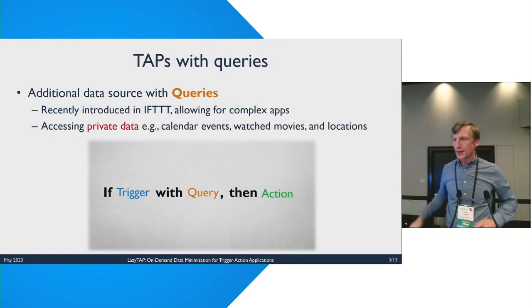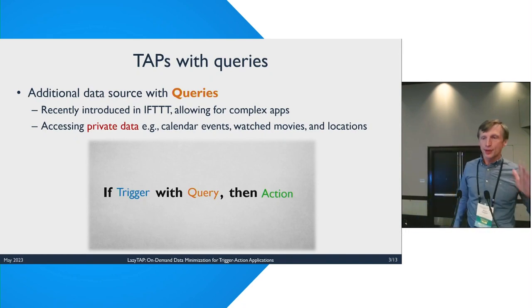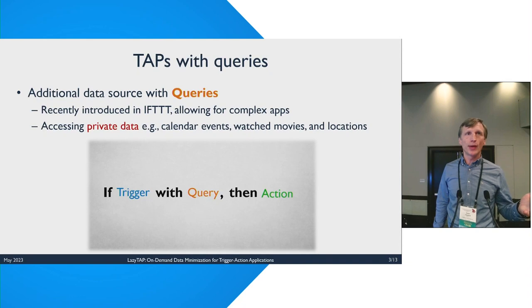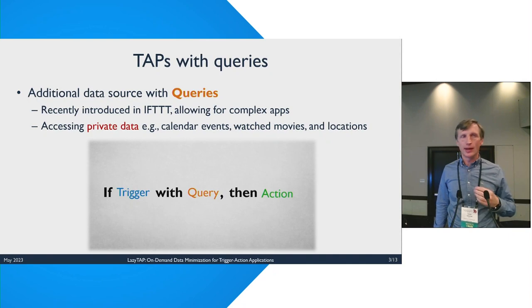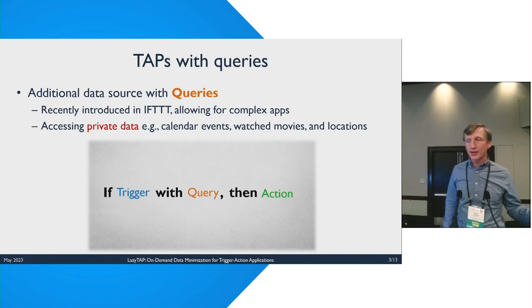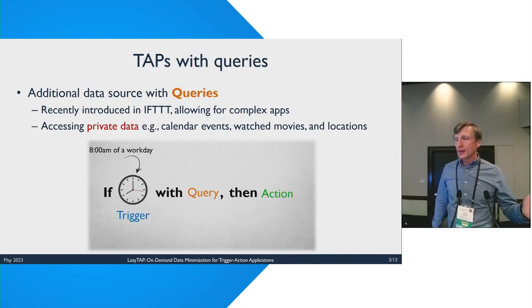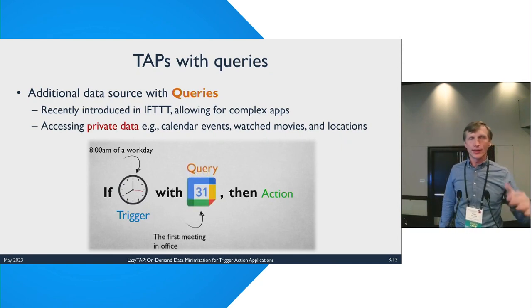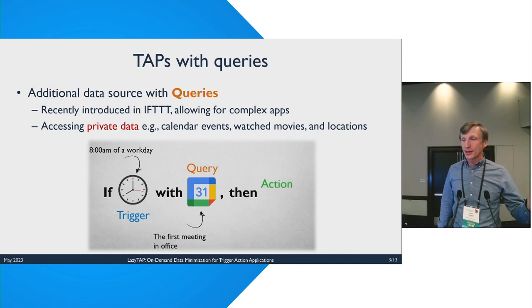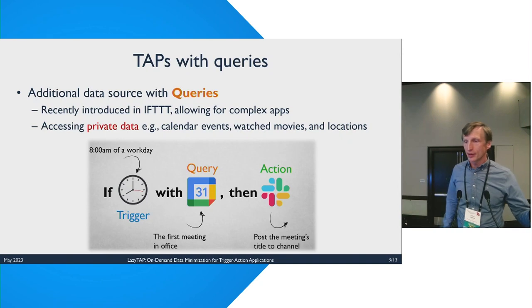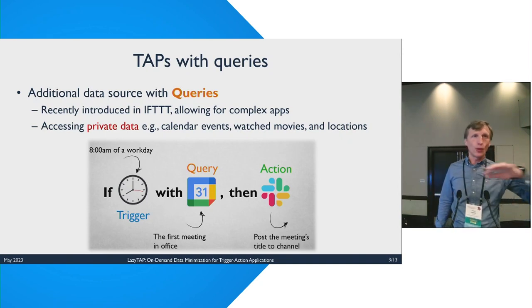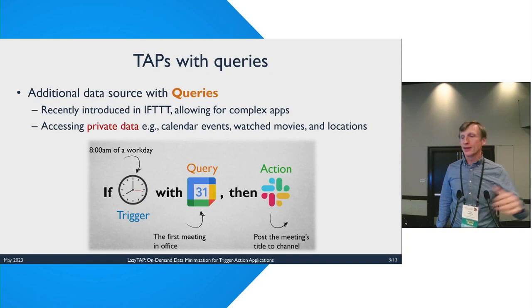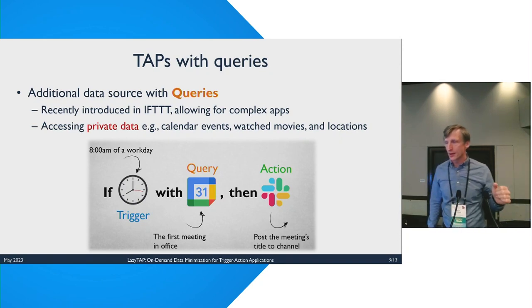Recently, Trigger Action Platforms have added a new way to add more sources to automations called queries. Here's an example: we set an automation where the trigger is time — eight o'clock in the morning — then we look up a user's Google Calendar to see if there's a first meeting, and if it's in the office, the action is to send a notification on Slack. So: trigger is time, query is calendar, and action is Slack.